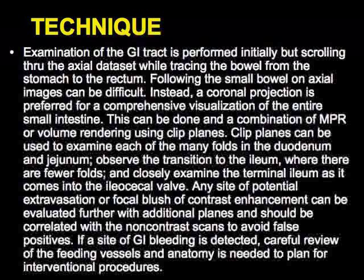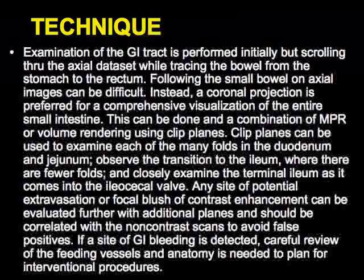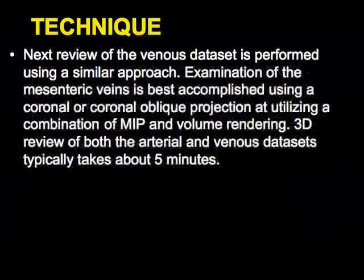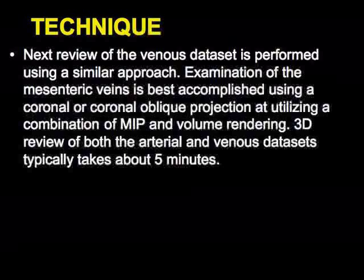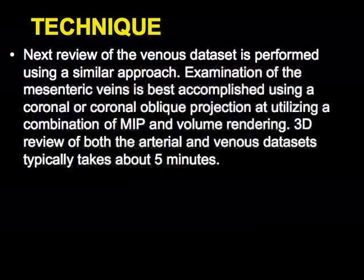Post-processing is critical; really small vessels are best defined on MIP images. On axial imaging alone, there is too much partial volume averaging to follow small vessels — you really need to go beyond axial imaging. Axial images are still helpful, and venous phase imaging is evaluated the same way. The venous phase nicely shows delayed bleeding and is where you see impressive varices, particularly in the lower esophagus and gastric fundus, which are not well visualized on arterial phase imaging.